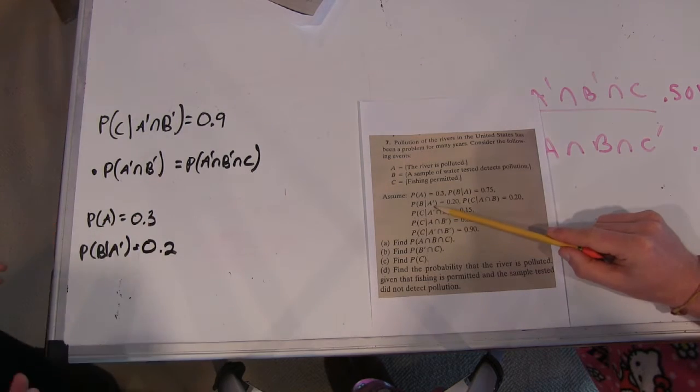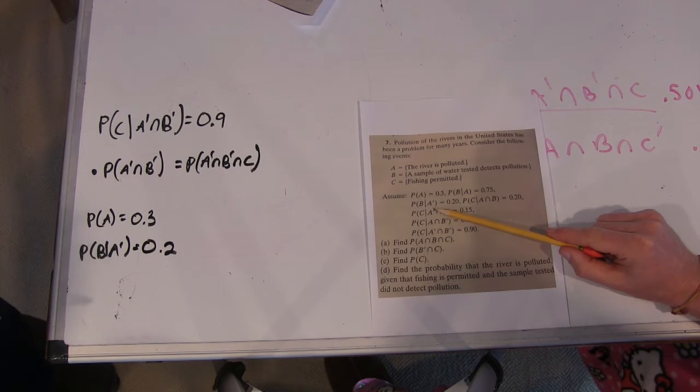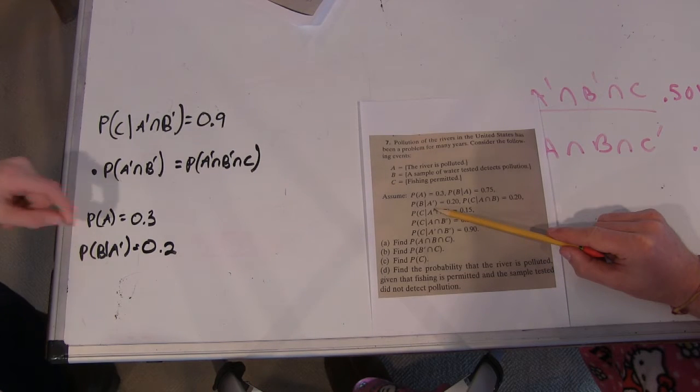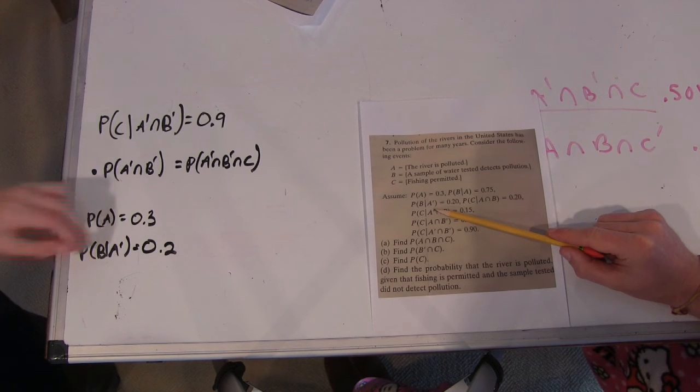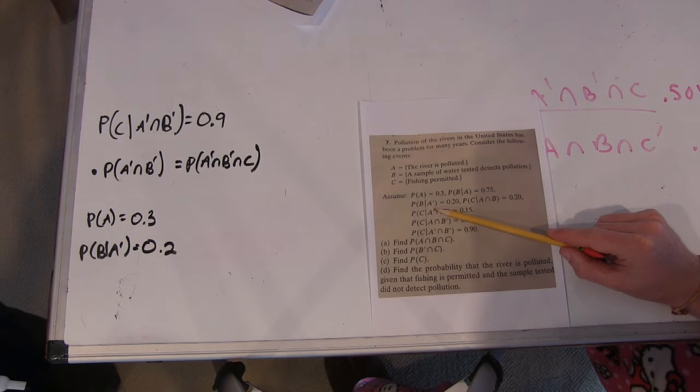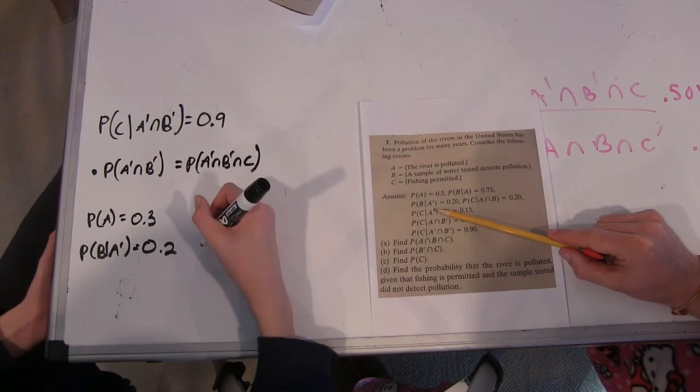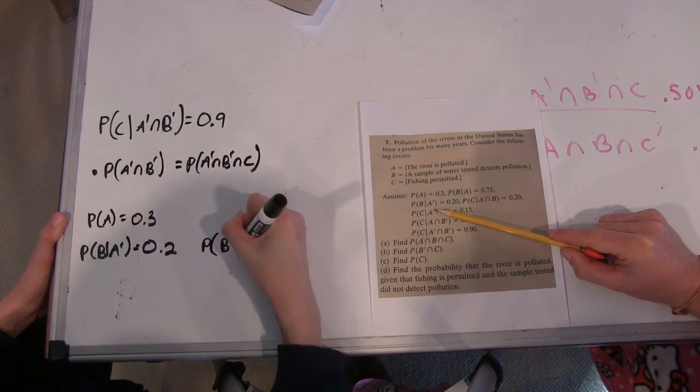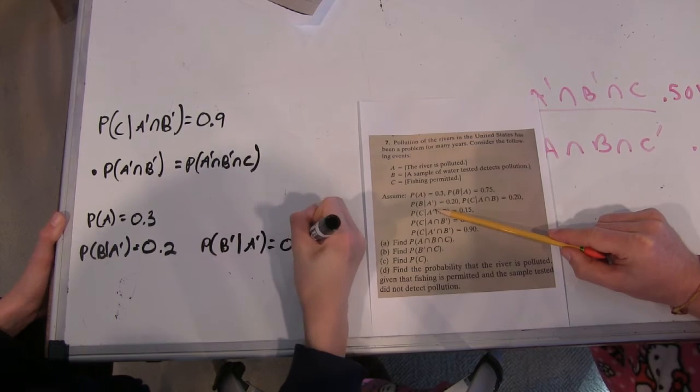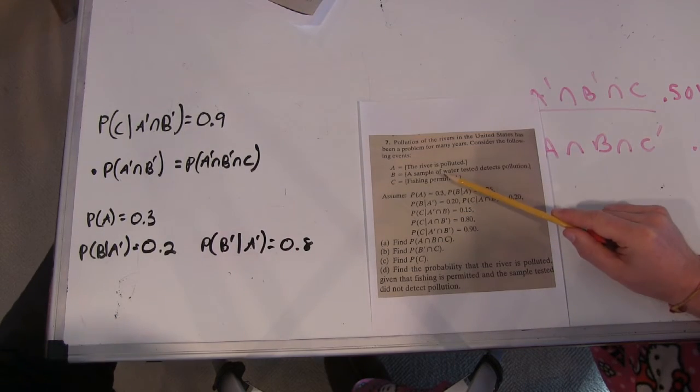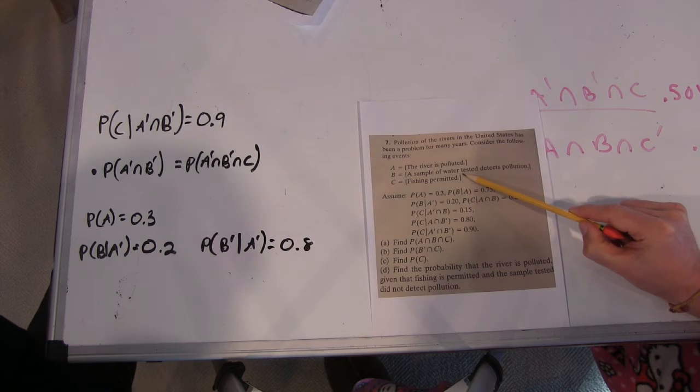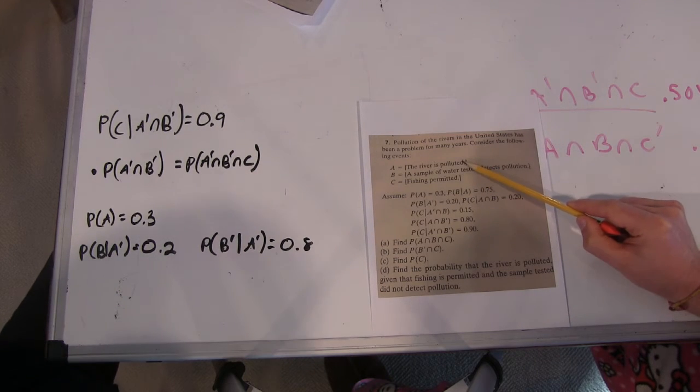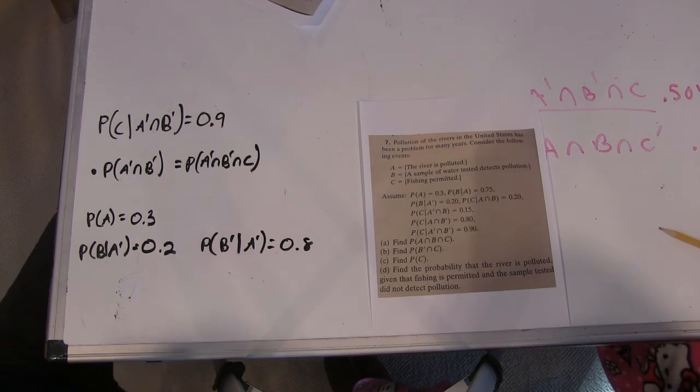And we can use this because the only other possible outcome for this event A prime is B prime intersect, or B prime given A prime. And that has to take up the other 0.8, the other 80% of the event A prime. So the probability of B prime given A prime is 0.8. And that is water test does not detect pollution given that the river is not polluted. That makes sense. So that would be a high number.